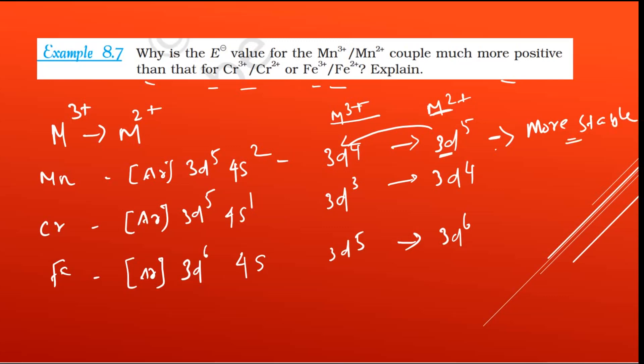So easy to go in the sense, what? It will be positive E⁰ value. Positive E⁰ value. It is easy to go. More easy, more positive.